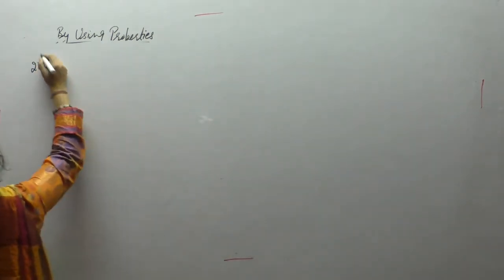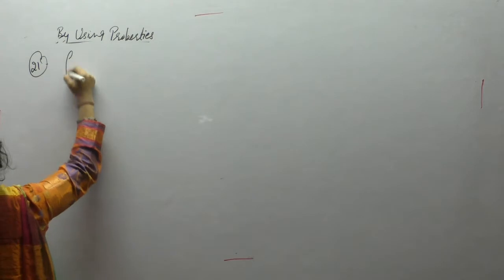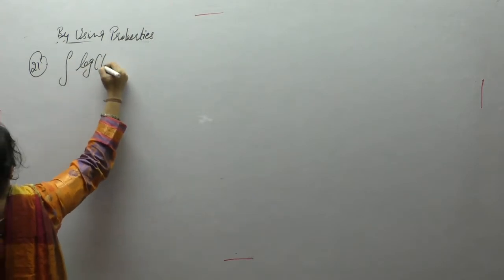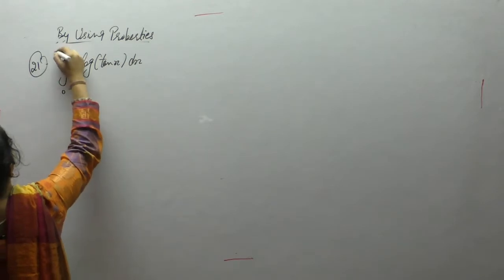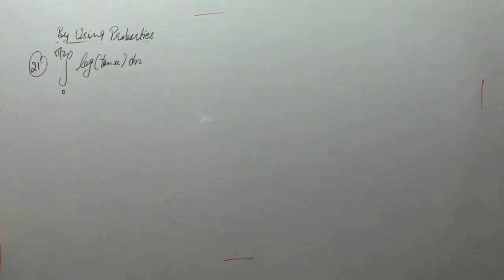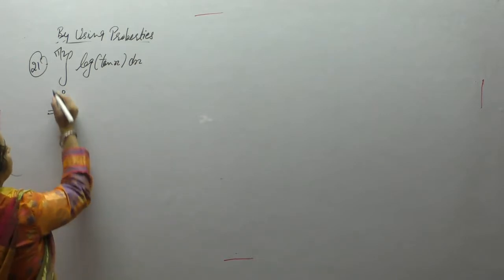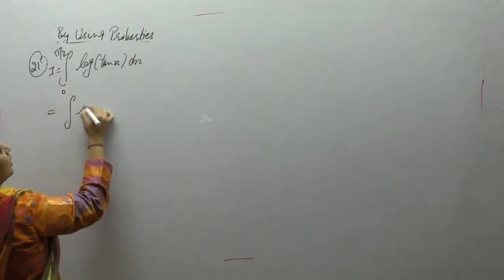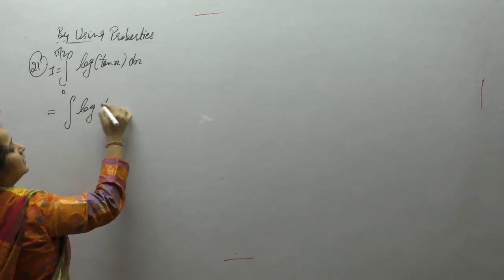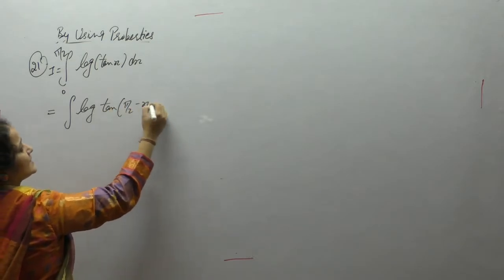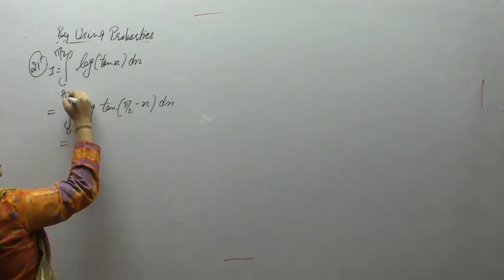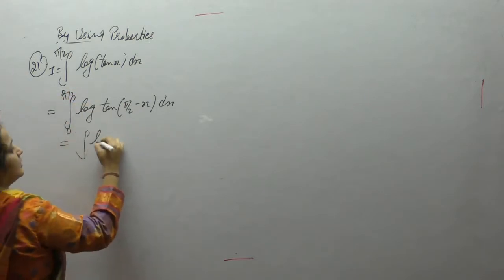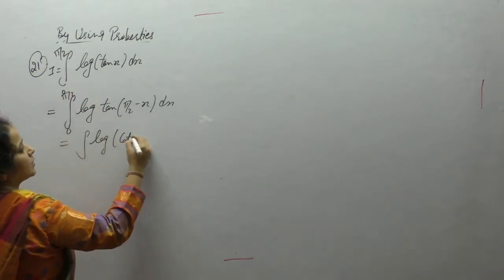Next is the integral of log(tan x) dx with limits 0 to π/2. Let this be I. Using King's property, replace x with (π/2 - x): tan(90° - x) is cot x, so we get I equals the integral of log(cot x) dx. Let this be equation 1, and the original be equation 2.